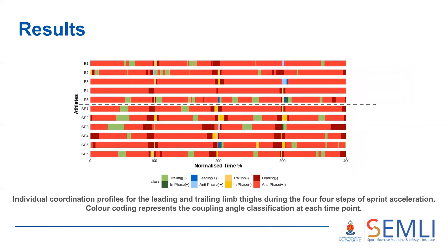The coordination profiles for each individual athlete across the four steps show the elite sprinters above and the sub-elite sprinters below the dashed line. The bright red antiphase pattern accounts for the majority of each step. Light green bands indicate a trailing positive pattern occurring just after contact in some athletes, where the swing thigh is flexing and the stance thigh is fixed. Darker red bands indicate a leading negative pattern in the latter part of the stance phase, where the stance thigh is extending while the swing thigh is fixed. The coupling angle difference score between the groups ranged from 2 to 3.7 percent, influenced by variations in timing of different coordination patterns between individuals.